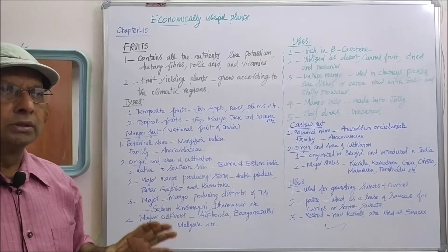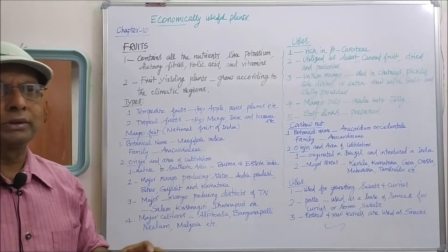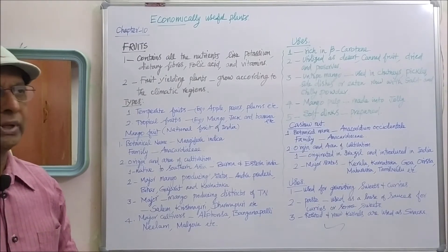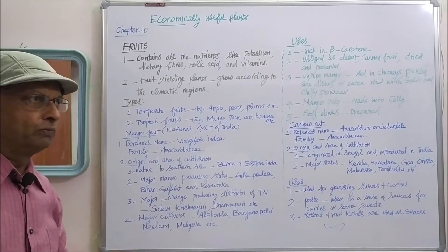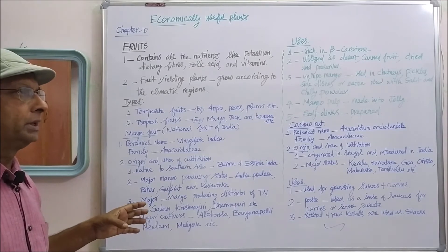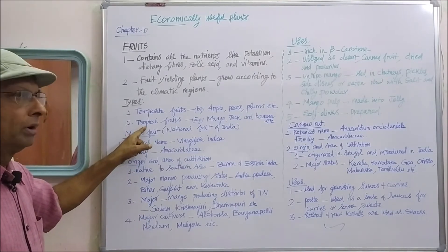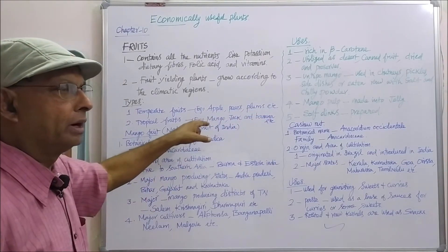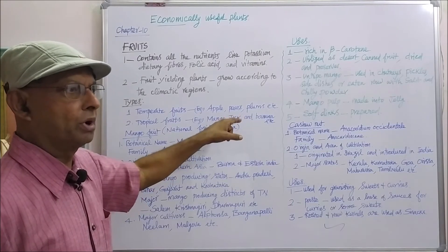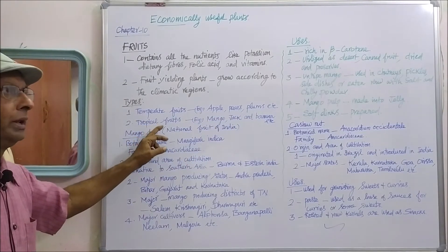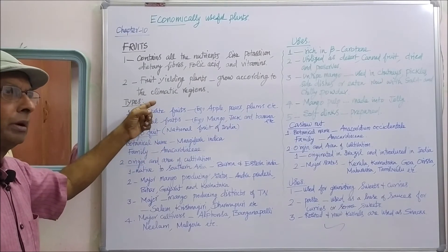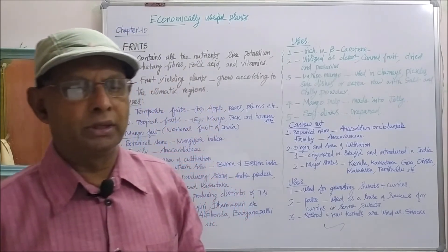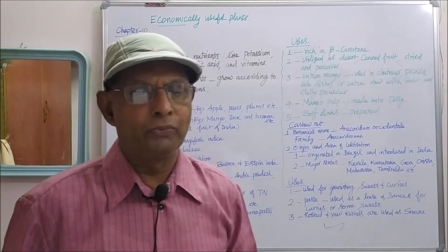Some of the fruit yielding plants will grow in the hot climate like our country, India. It's a hot climate, tropical country. So the plants which yield fruits in the hot climate regions are called tropical fruit yielding plants. For example, mango, jack, banana — they are the tropical plants which produce tropical fruits. The tropical fruit yielding plants will not grow in the temperate areas, and the temperate fruit yielding plants will not grow in the tropical areas. So a particular climate is necessary for growing a particular type of fruit yielding plant.